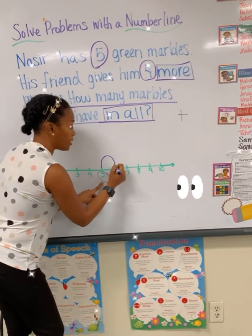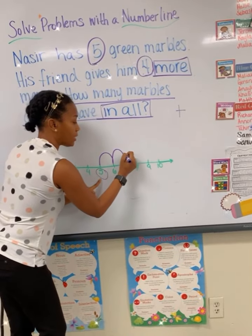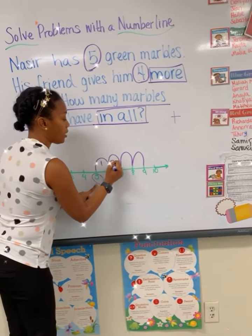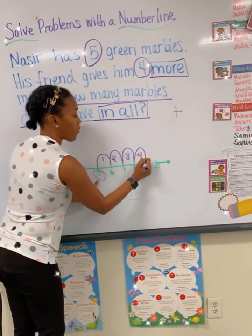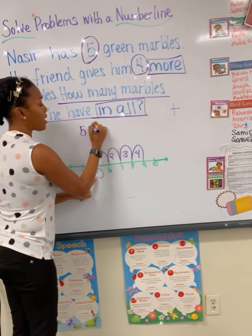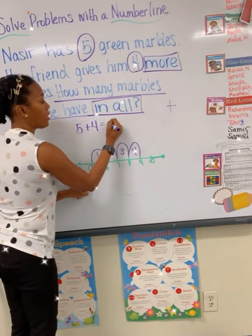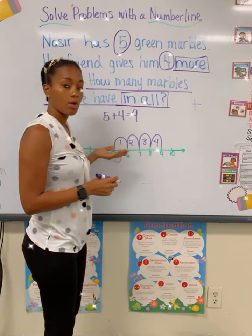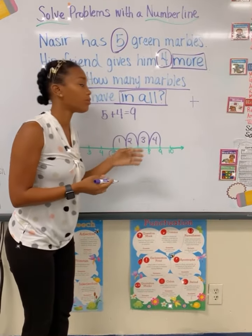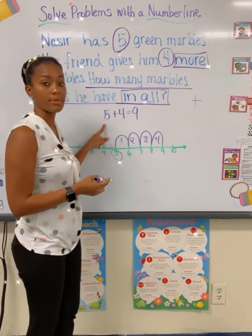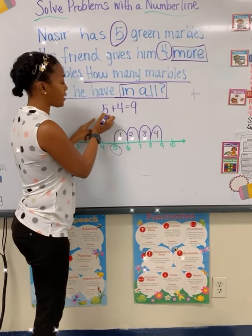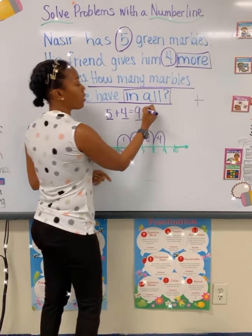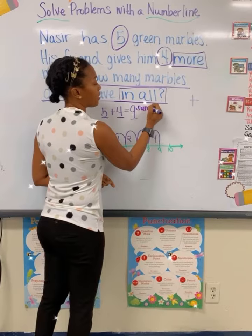I am then going to hop four spaces to the right because I'm adding. So I'm going to hop one space, two, three, four. Therefore, five plus four is equal to nine. This is what we call an equation, or if you're in first grade, you might know this to be a number sentence. The five is an addend, the four is an addend, and the nine is what we call the sum.